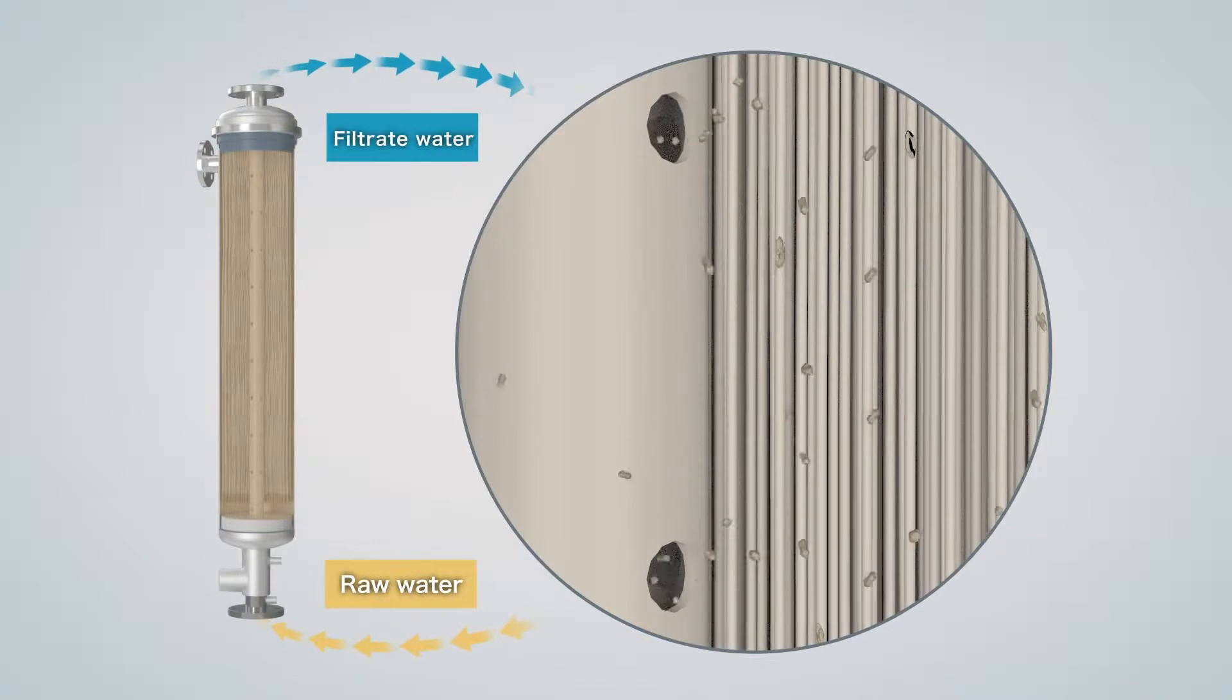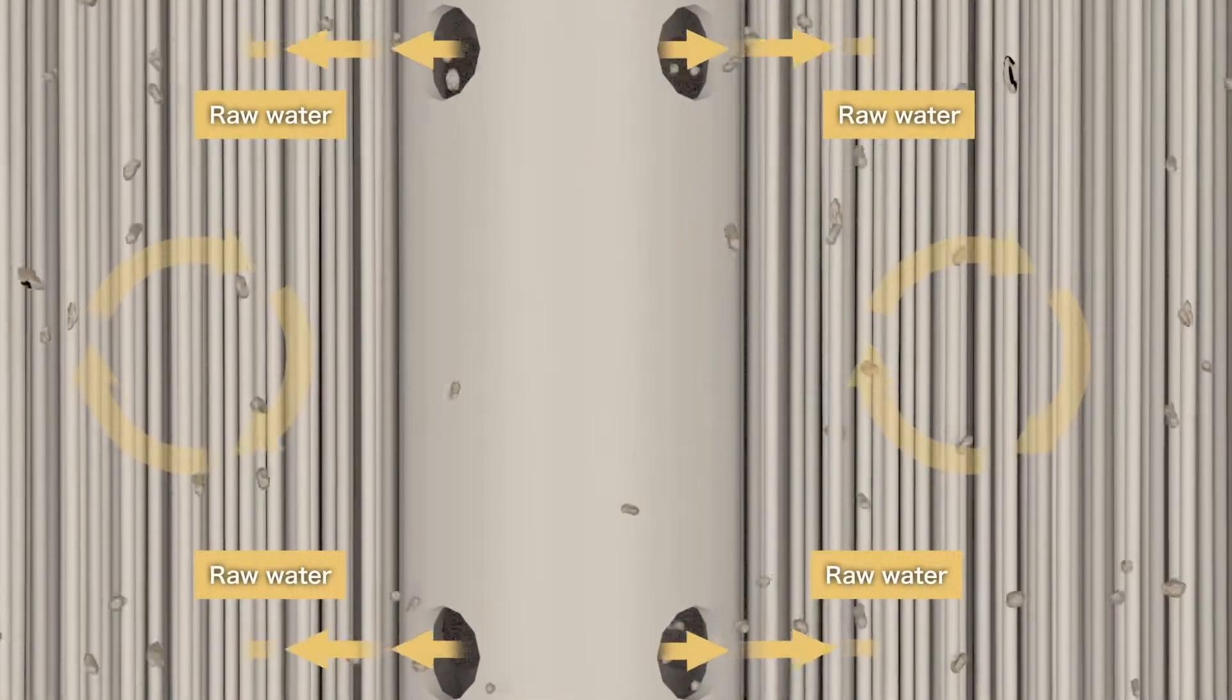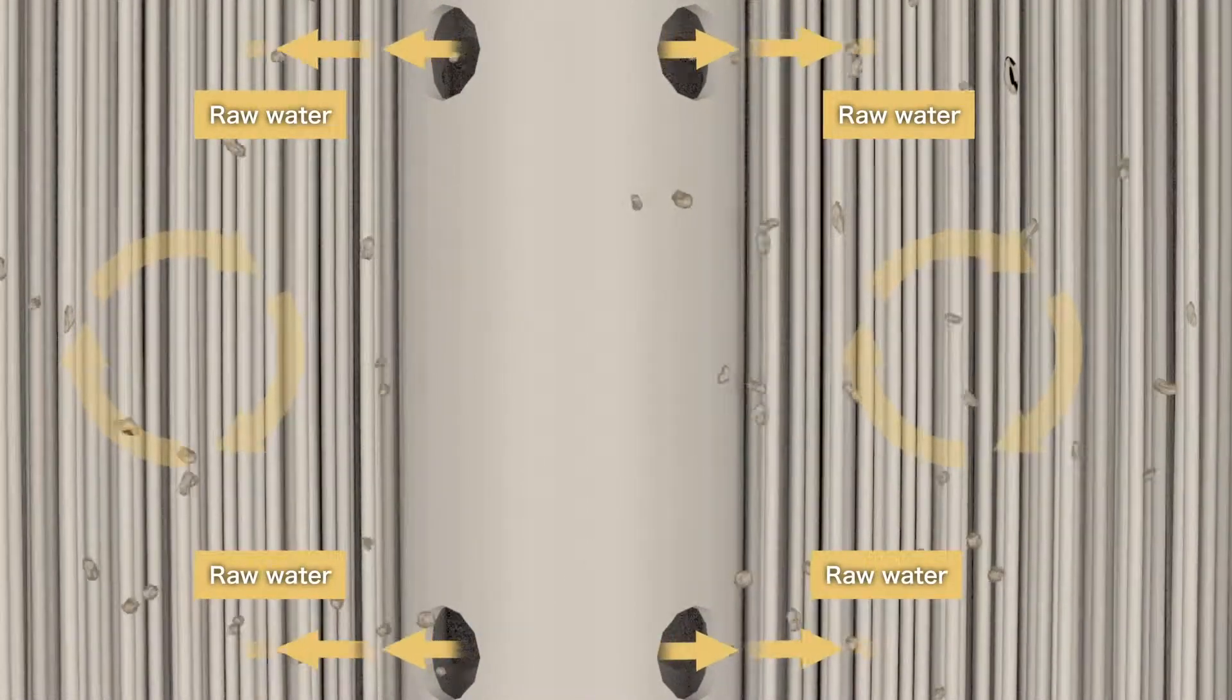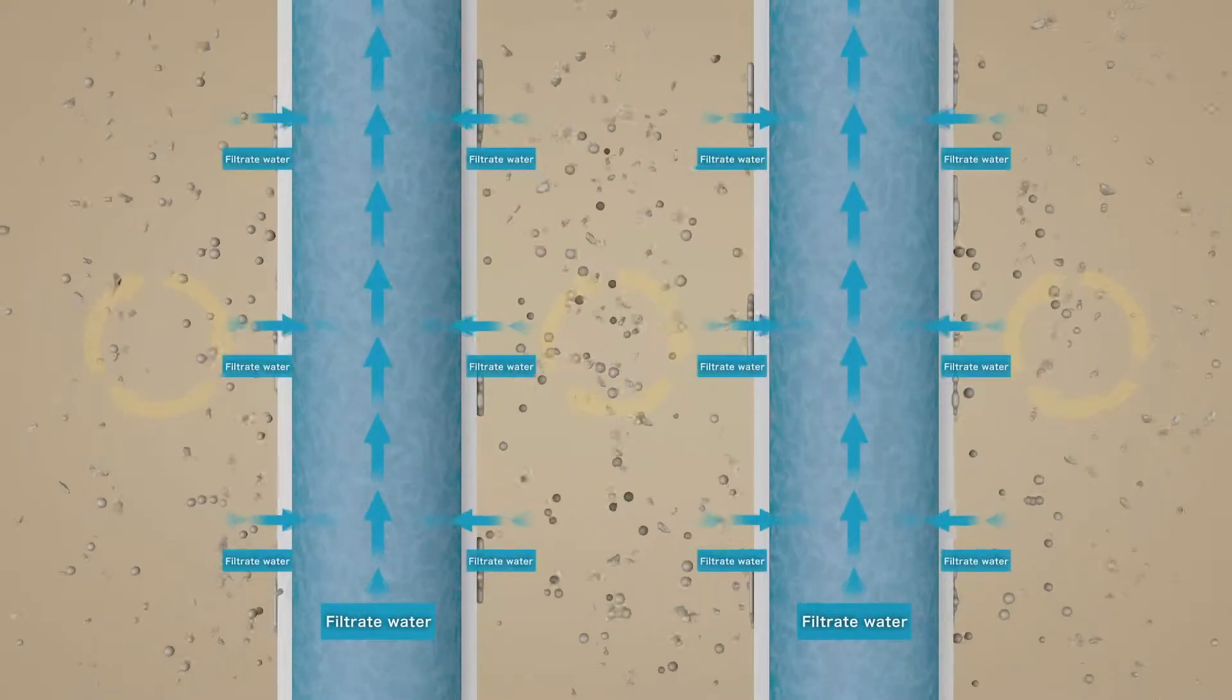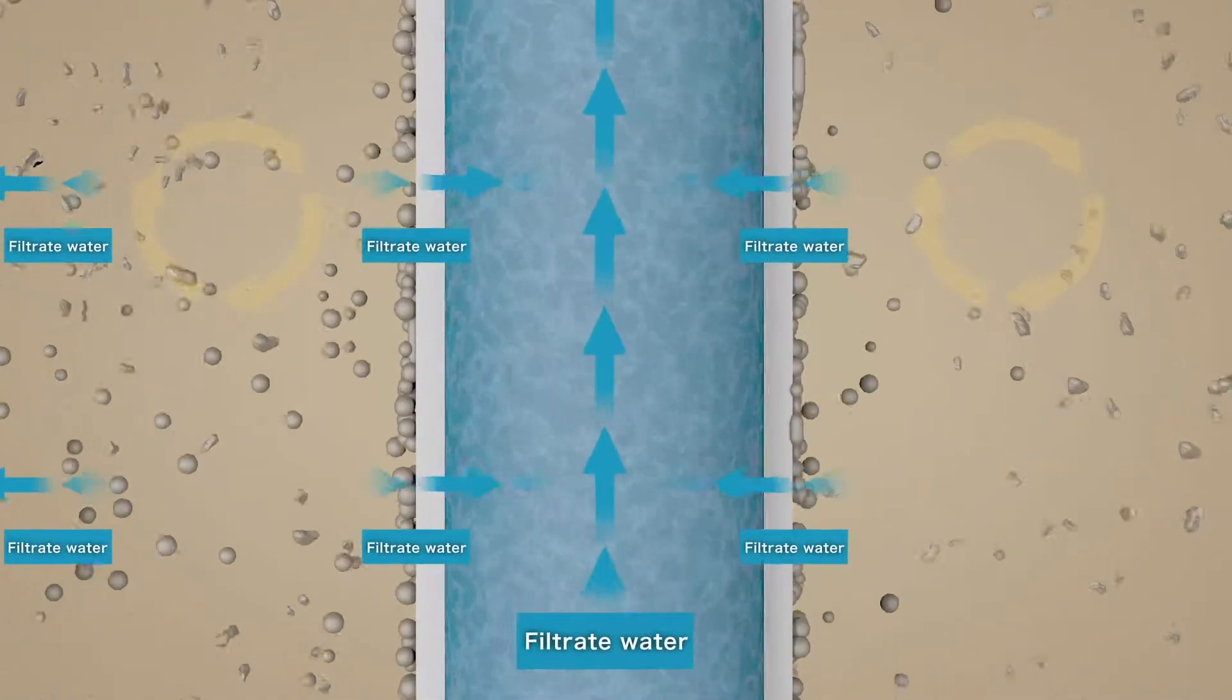By distributing raw water from the center distributor, a flow occurs on the surface of the hollow fiber membrane. This flow removes the particles attached on the membrane surface, like cross-flow filtration, and so inhibits particle accumulation.